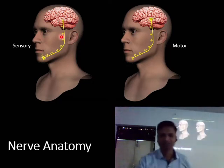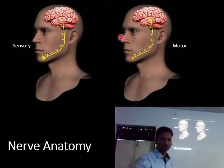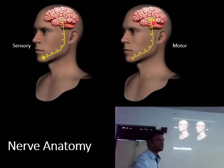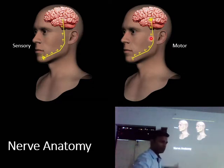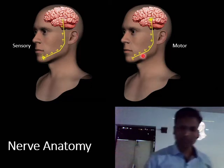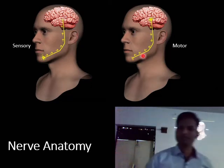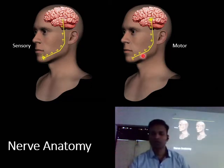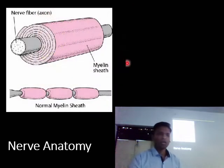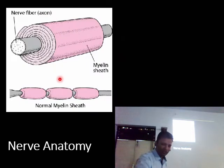Motor neurons take the impulse — the command — from the brain to the periphery, to the muscle, to perform some action.